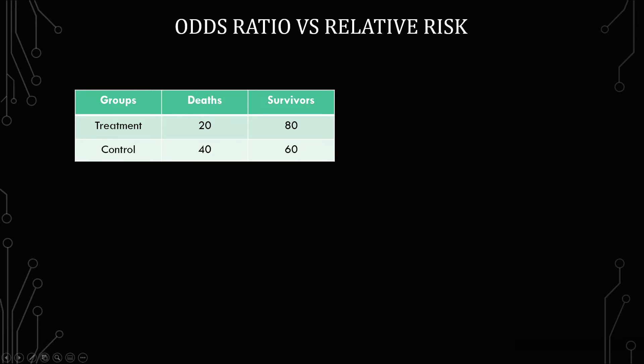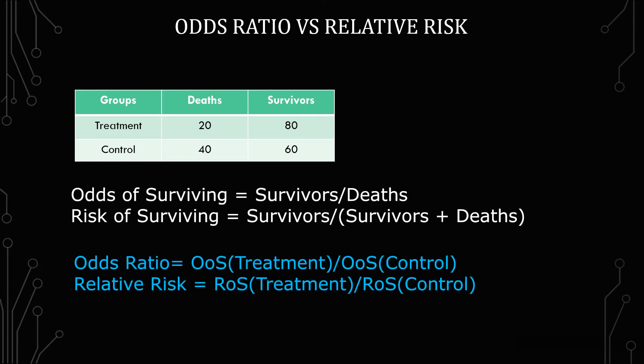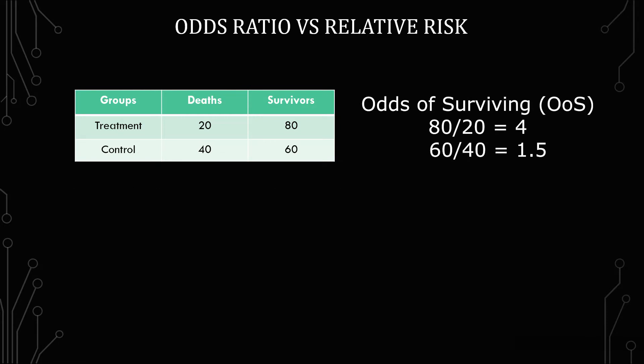First, we've got to calculate odds and then the risk of surviving, as opposed to the odds and risk of death. For the odds of surviving in the treatment group, we have 80 over 20, which gives us 4. For the odds of surviving in control, we have 60 over 40, which is 1.5.